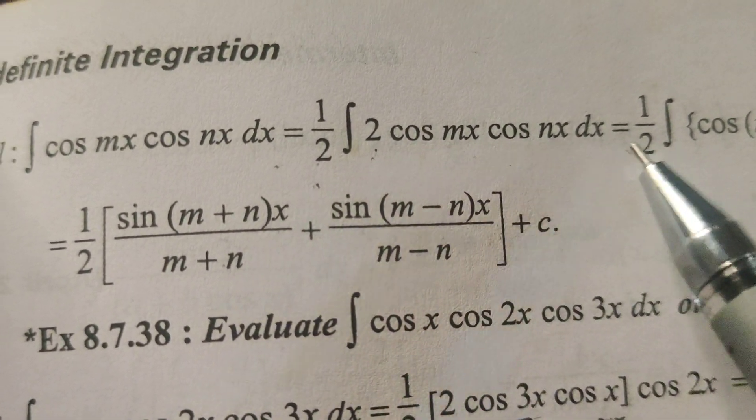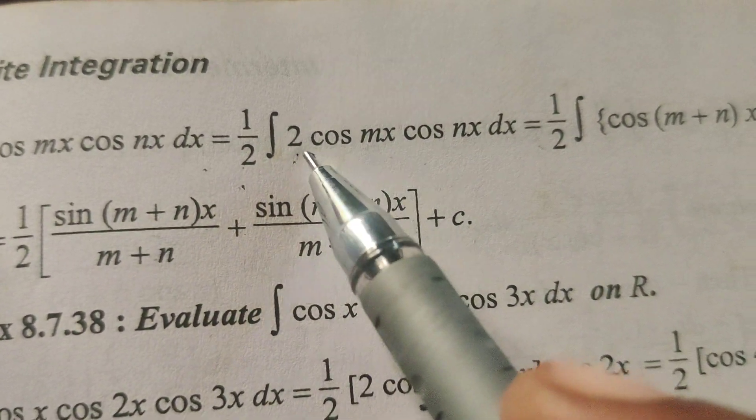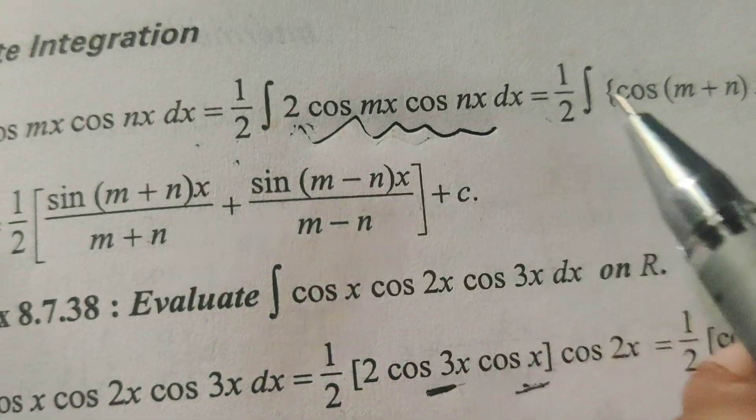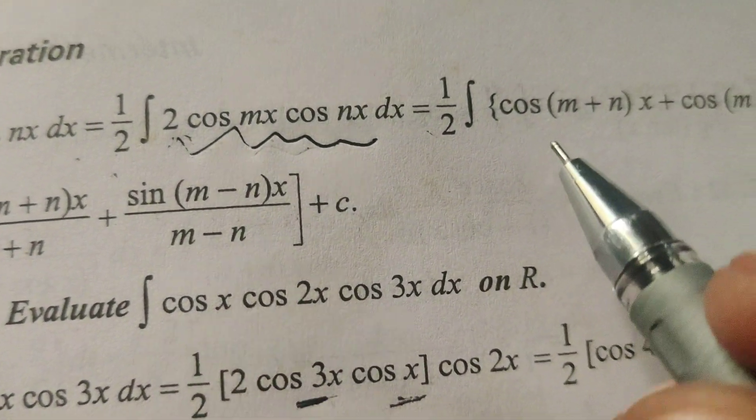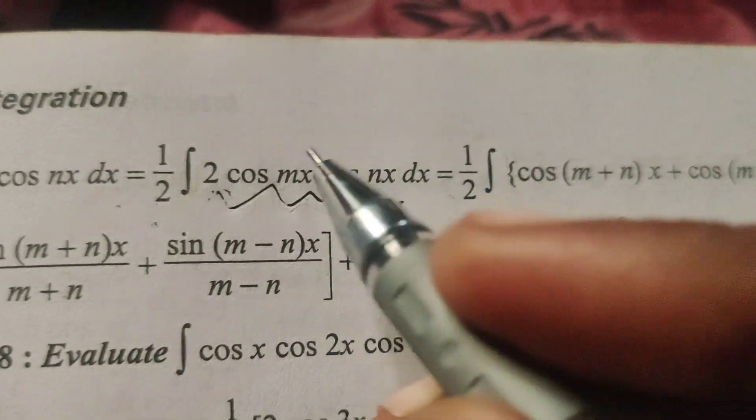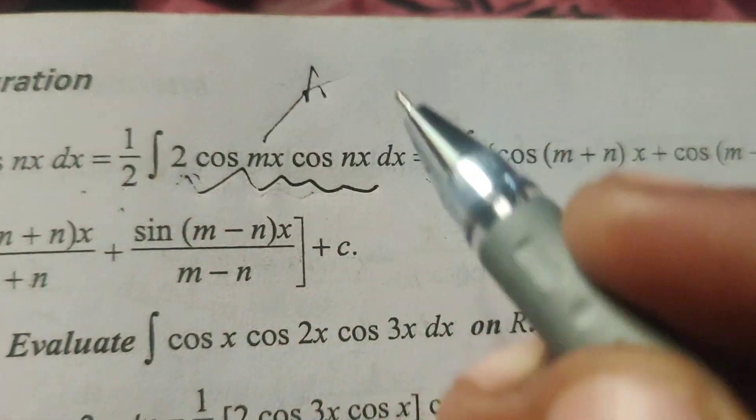Now applying the formula: 2 cos a cos b equals 1 by 2 into cos of a plus b plus cos of a minus b. This is a and this is b.